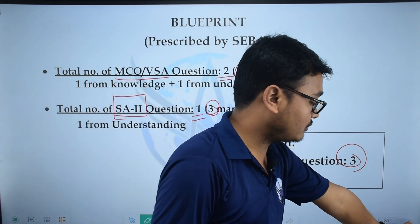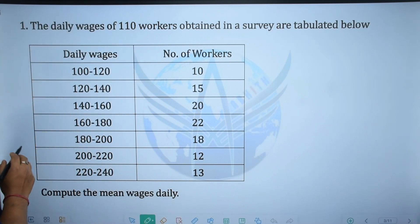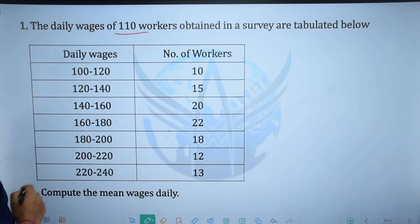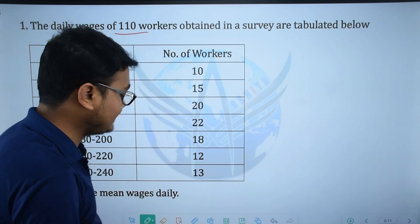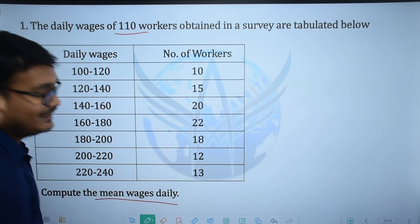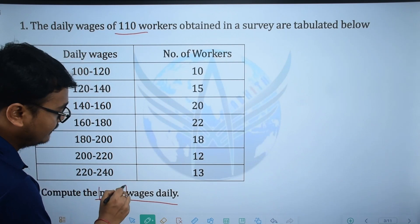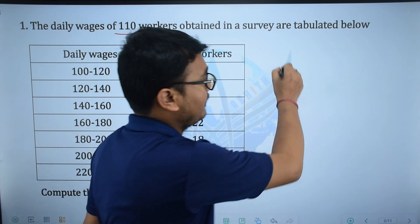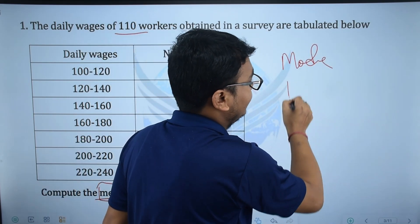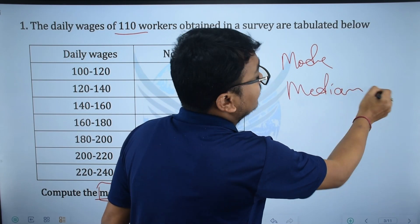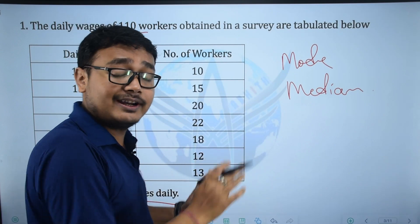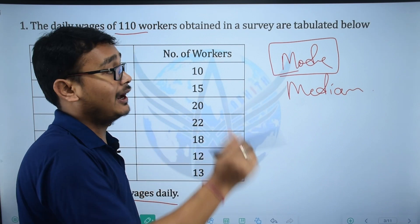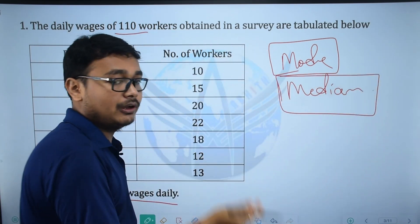Let's start with our first question. The daily wages of 110 workers obtained in a survey are tabulated below — daily wages and number of workers. We need to compute the mean wages. This term is mean. I'm going to tell you what mean is. The other terms include mode and median. Mean is the average value of the given data. Mode is the most repeated value in the given data. Median is the middle value of the given data.